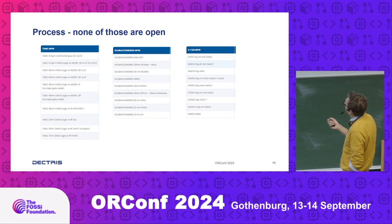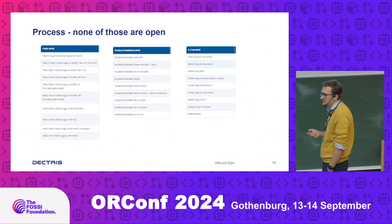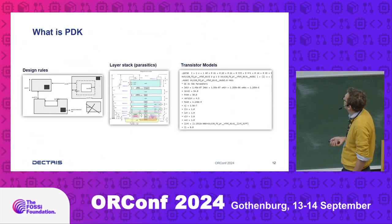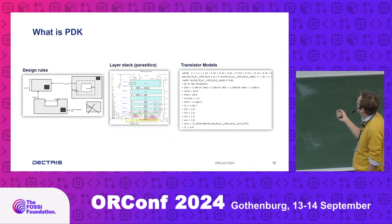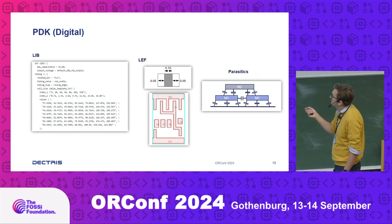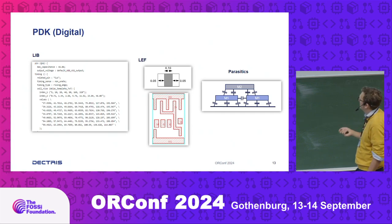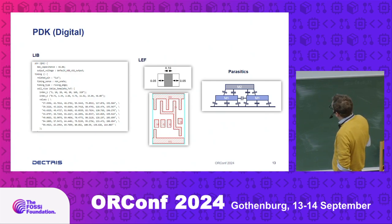You have multiple processes — this is an example from the Europractice website. These are the processes that universities or smaller companies have access to, and none of those are open. If you have a company that has been designing in a non-open process for multiple years, you have to port it. A PDK contains the design rules defining geometries of your circuits, a layer stack-up defining parasitics and rules, and transistor models. The digital PDK includes lib files defining timing tables for standard cells, a LEF file defining geometrical rules and standard cell layout, and a parasitic extraction file.